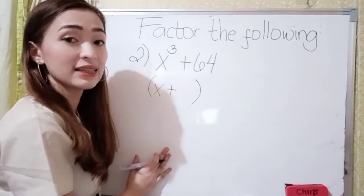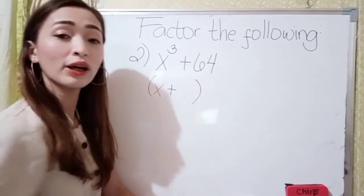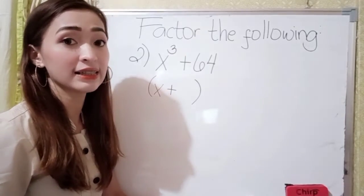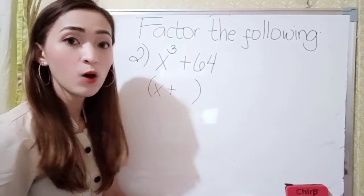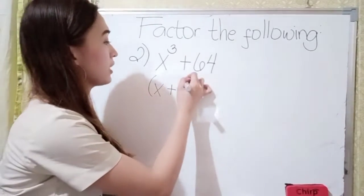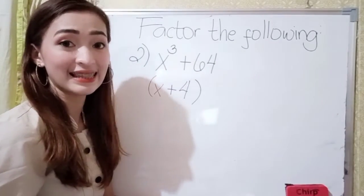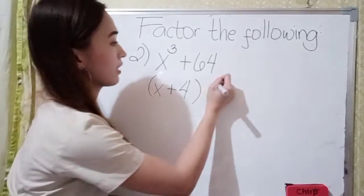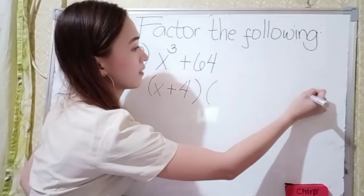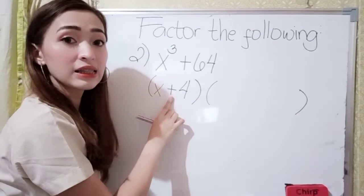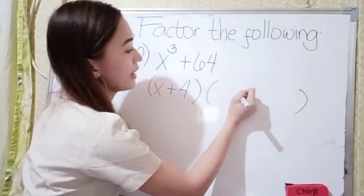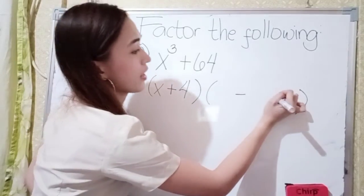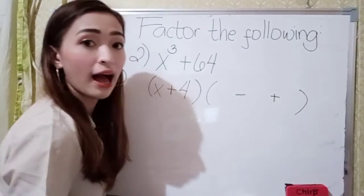Next, what is the cube root of 64? Think of a number that if you multiply by itself thrice, the answer is 64. So, that is 4, because 4 times 4 is 16, and 16 times 4 is 64. If this is a plus sign here, so let's put a negative sign here, and then in our last term we have positive.